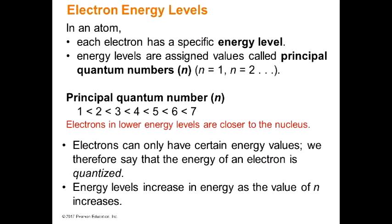Things at the top of the periodic table have electrons closer to the nucleus because you don't have as many rings. Remember the Michigan Stadium example — the golf ball in the center is your nucleus, the first row of bleachers is your first energy level, and the nosebleed seats are way out at higher levels. Electrons can only have certain energy values — we say these energies are quantized. Energy levels increase in value as you go up.